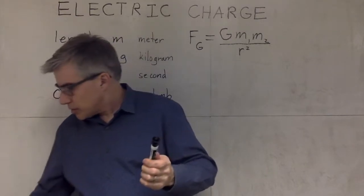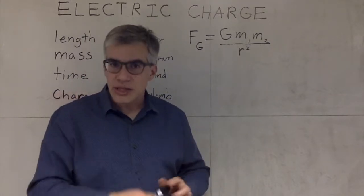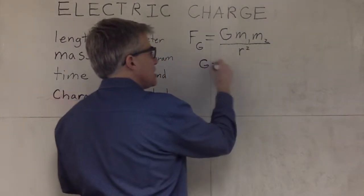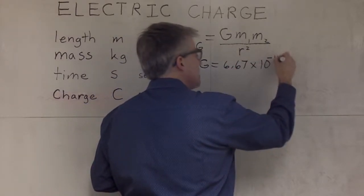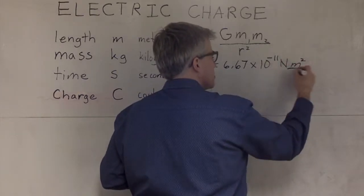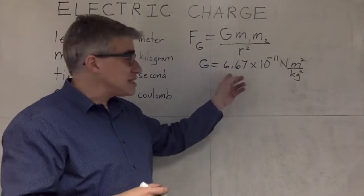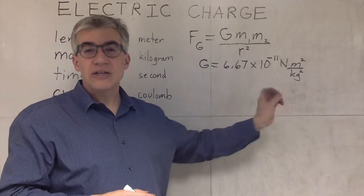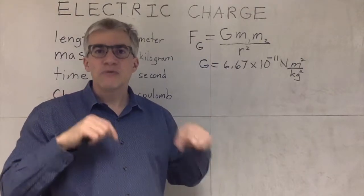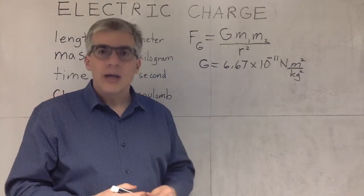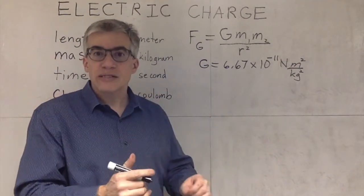Everything in the universe attracts each other gravitationally. We don't notice this on the everyday scale because big G happens to be 6.67 × 10⁻¹¹ N·m²/kg². So if you have one kilogram and one kilogram one meter apart, you only get 67 trillionths of a newton. You have to amass something the size of a planet before you get noticeable amounts of gravity. But electric force is much, much stronger, so it's easy to get dramatic electric effects inside a laboratory.